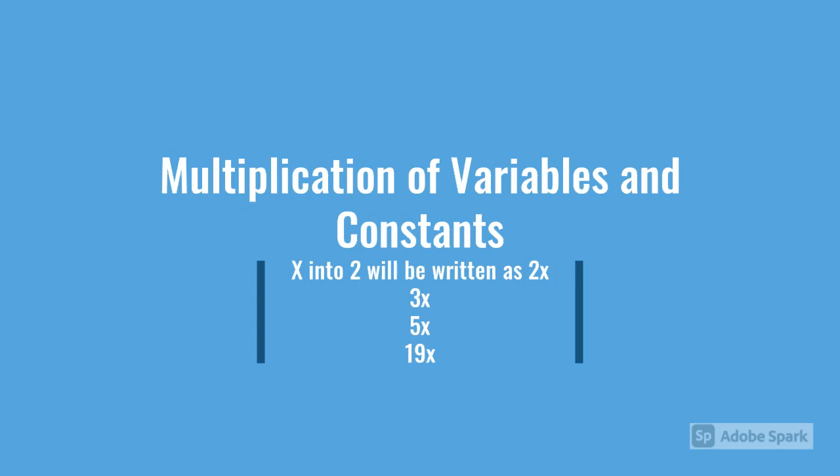Multiplication of variables and constants: x into 2 will be written as 2x. So now over here, there is no such thing as a multiplication sign in algebra. If there is a statement written, multiply 2 by x, the answer would be straight up written as 2x. If it is 3 into x, the answer would be straight up written as 3x. Some other examples are 5x and 19x.